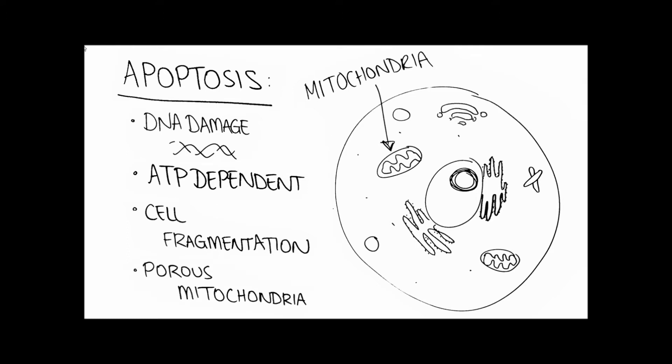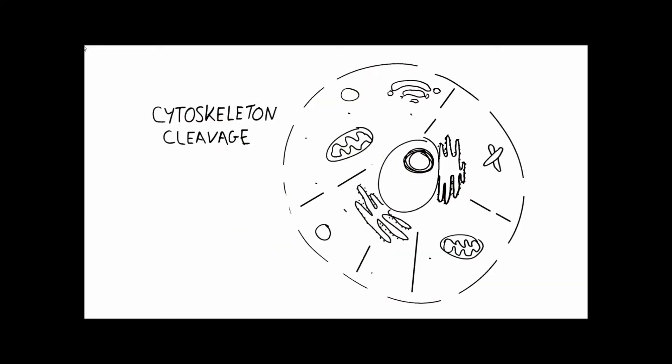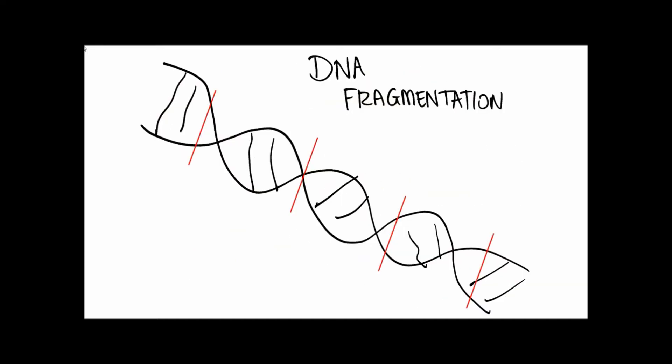The enzymes primarily responsible for apoptosis are caspases. This group of proteins are cysteine proteases which trigger a protease activation cascade, ultimately resulting in cytoskeleton cleavage, chromatin condensation, and DNA fragmentation.